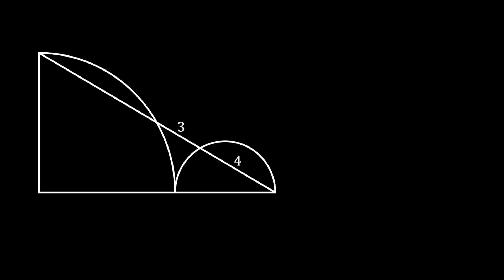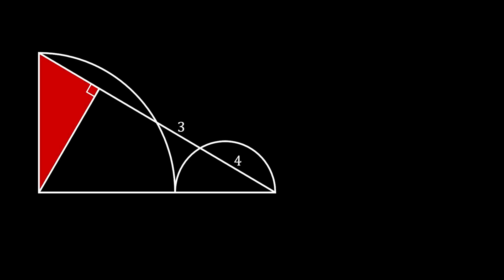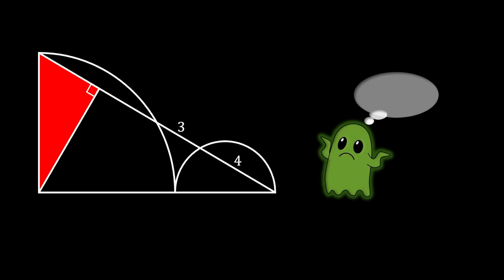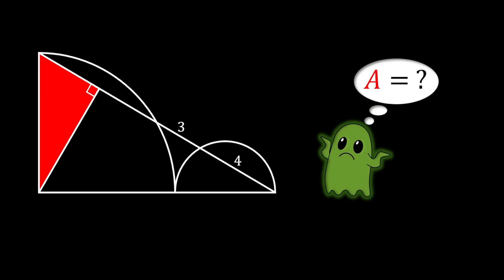We will pull a line from the center of the quarter circle that is perpendicular to our previously constructed line, and we will notice this red right triangle. The question is: can you calculate the area of this red right triangle?